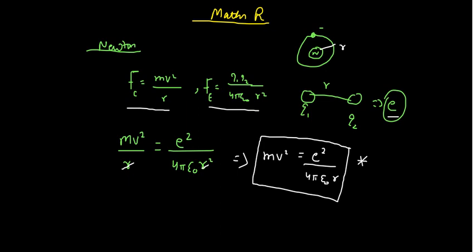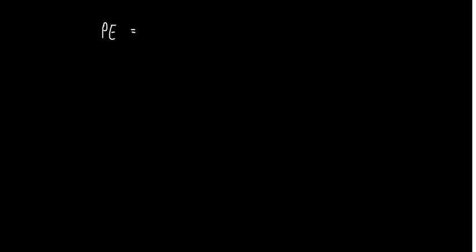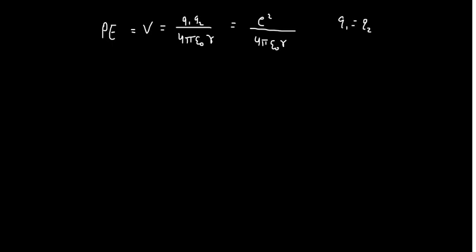On that basis, he gave us kinetic energy and potential energy. Let's see potential energy first. Potential energy, V or U, is 1 by 4πε₀ times q1 times q2 divided by R. Or you can write it as E² divided by 4πε₀R. Here we also assume that q1 and q2 are equal to E — the considerations are the same.